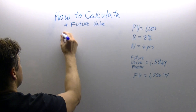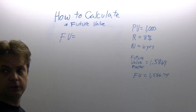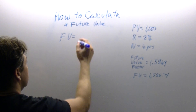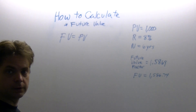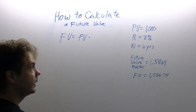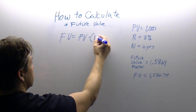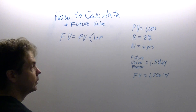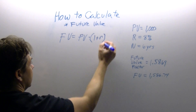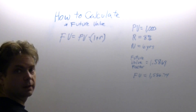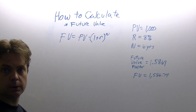Future value — we use the initials FV for future value — is equal to PV, which is our present value, multiplied by 1 plus R, which is our interest rate of 8%, and then we raise this to N, which is our number of years.